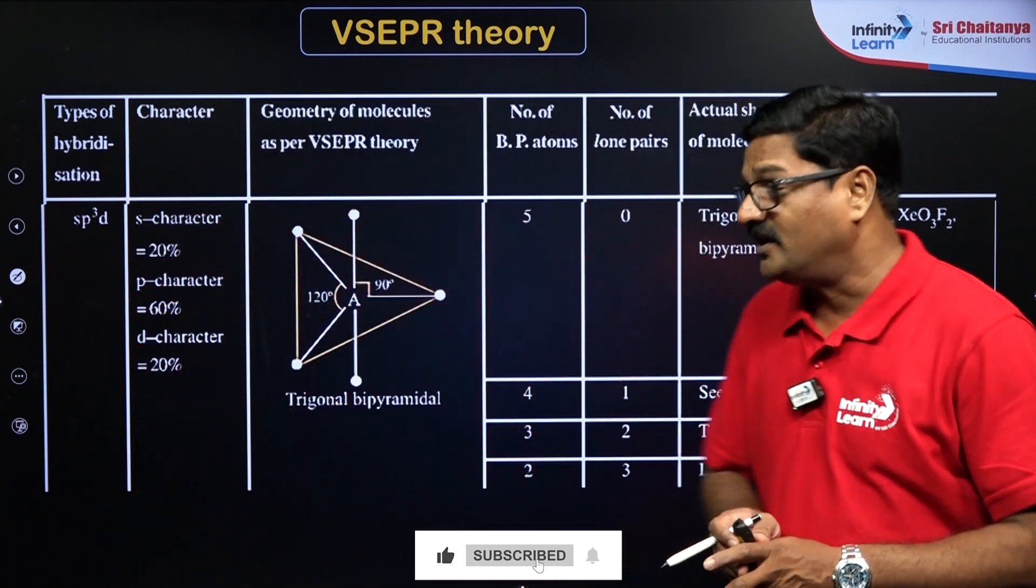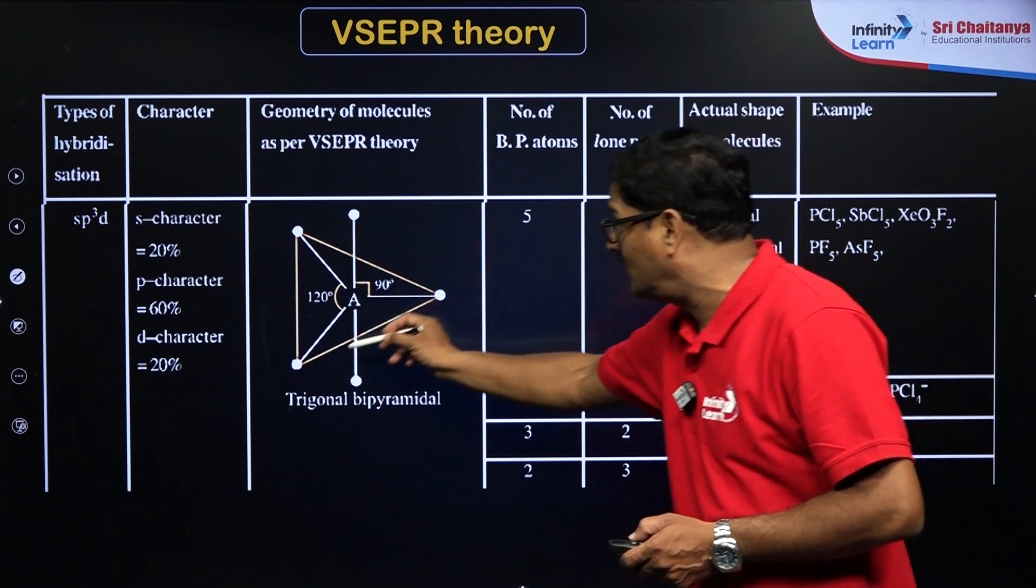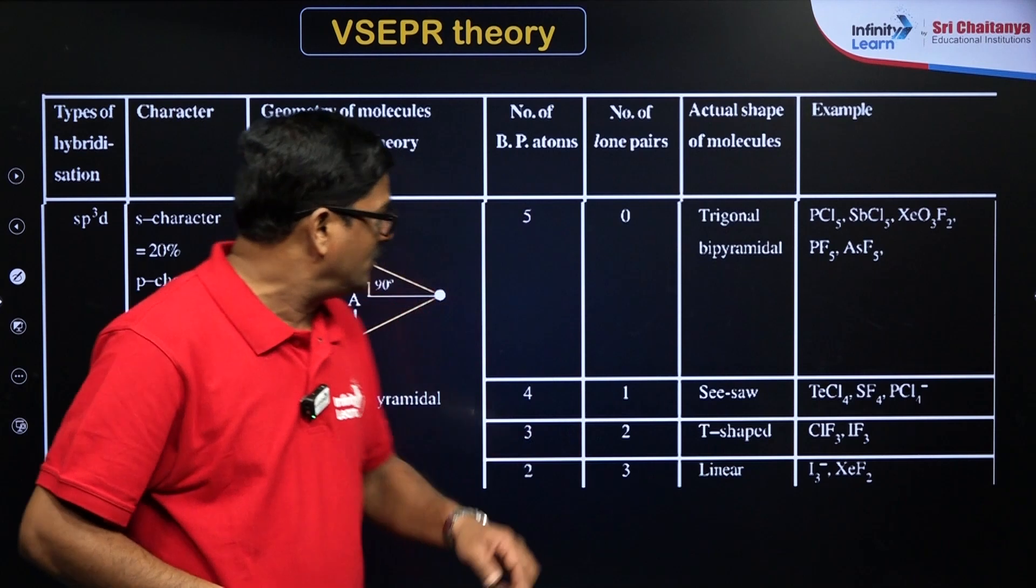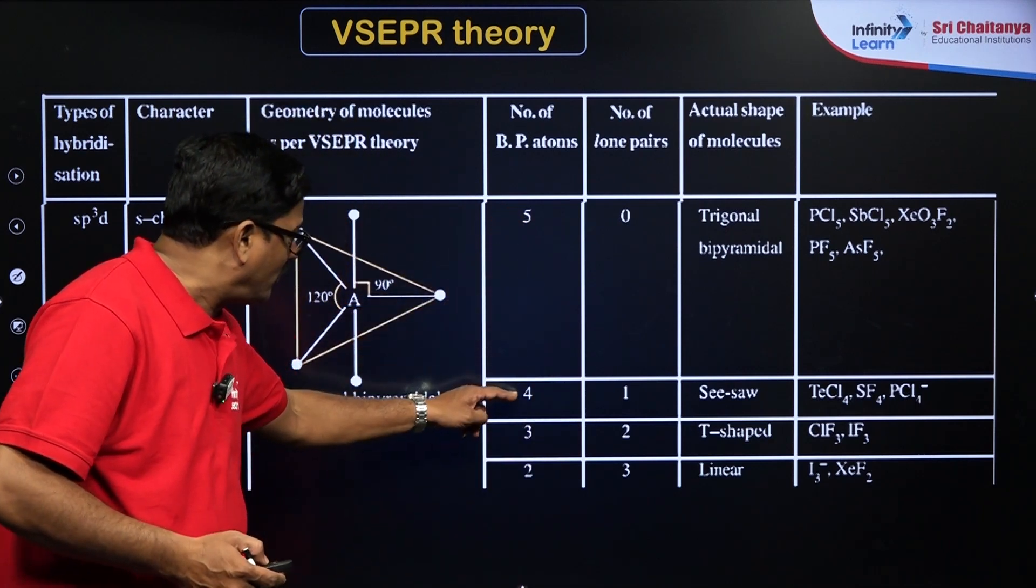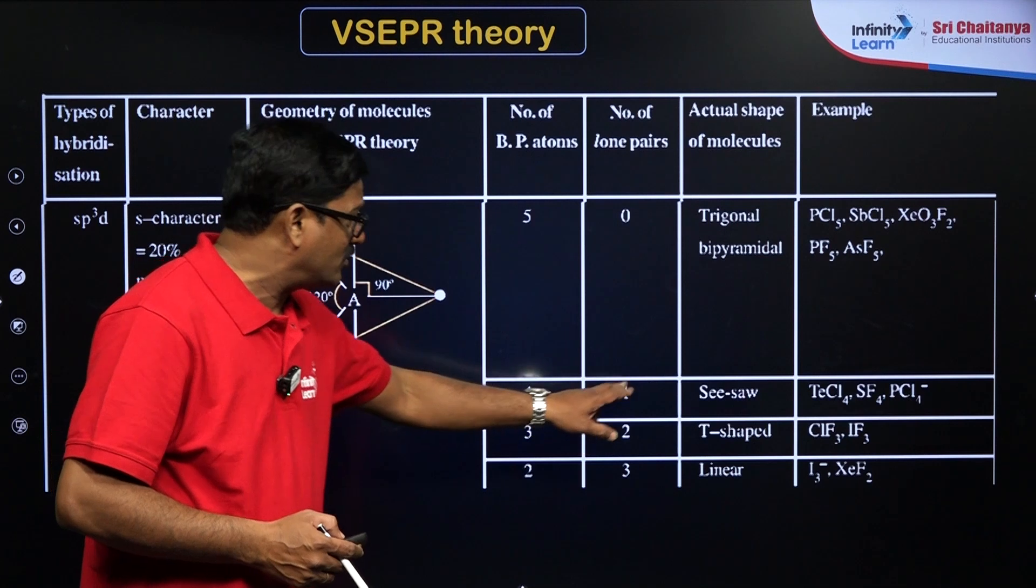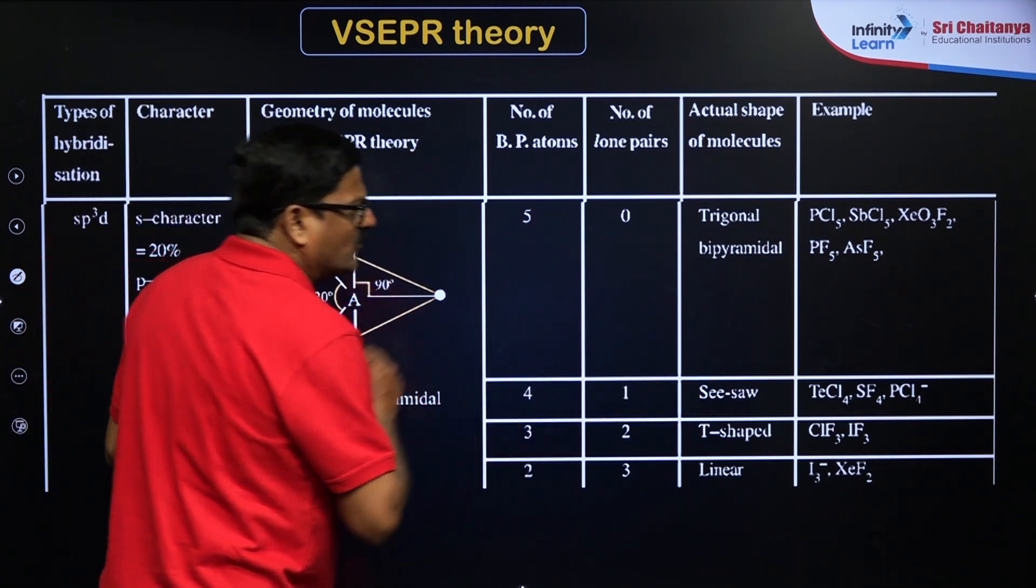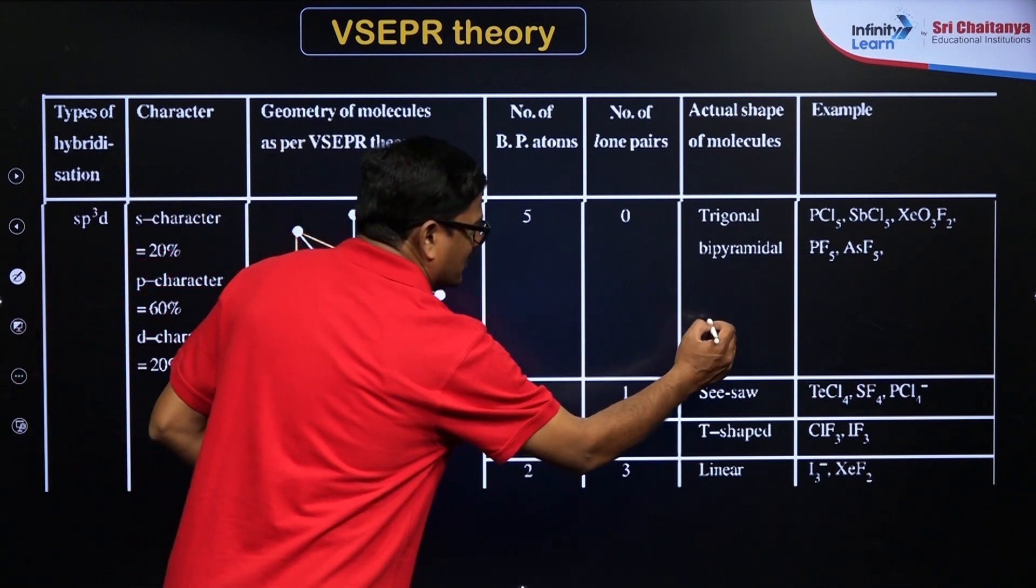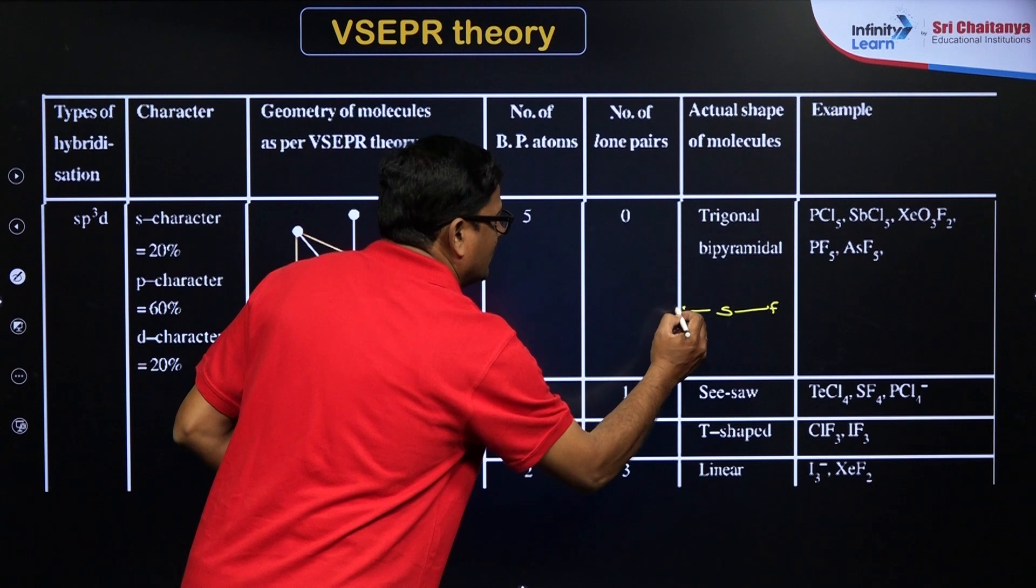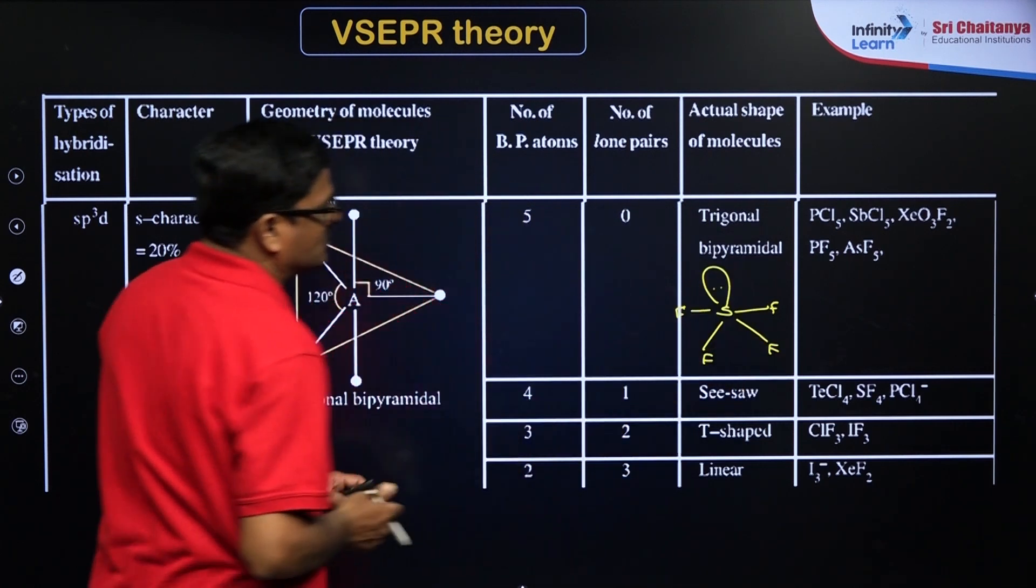In this SP3D hybridization, five bond pairs, there is no lone pair, you are going to have trigonal bipyramidal. PCl5 is the best example. And also if you have four bond pairs and one lone pair, steric number is 5, and it is going to have see-saw shape. What is that see-saw shape? You can say SF4 is an example. So SF and F, it is a see-saw shape, with one lone pair of electrons.